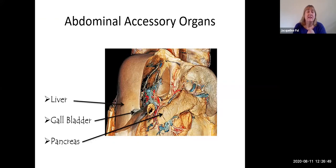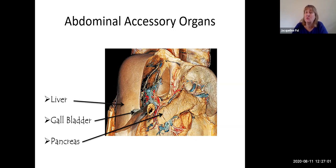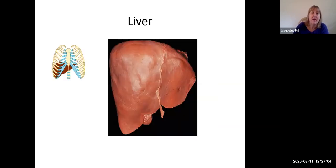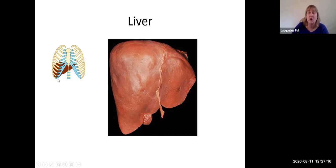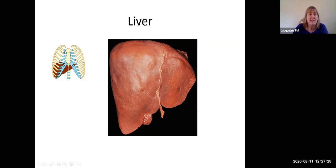Welcome back. In this section we're going to learn about the three accessory organs located in the abdominal cavity, because they all have secretions that go into the small intestine, which we've already covered. The first of these organs is the liver, which is the largest organ inside your body. It weighs several pounds and is located in the right upper quadrant of your abdomen, just tucked underneath the diaphragm, extending across the midline.